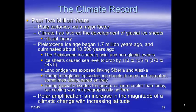About 1.7 million years ago, an ice age began and culminated about 10,500 years ago. The ice sheets caused sea level to drop by about 113 to 135 meters — roughly 370 to 443 feet — and a land bridge was exposed linking Siberia and Alaska. During interglacial episodes, ice sheets thinned and retreated and sometimes disappeared completely. During glacial episodes, temperatures were cooler than today, but cooling was not geographically uniform. There was also polar amplification — an increase in the magnitude of climatic change with increasing latitude.